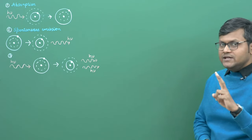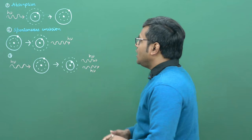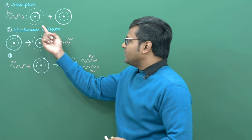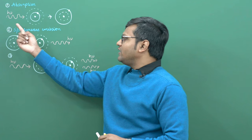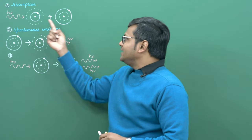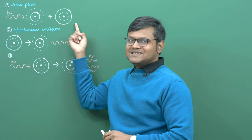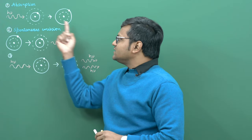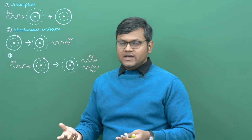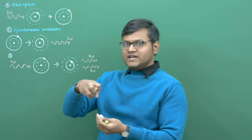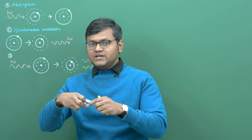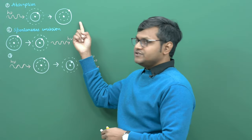This leads to mainly two kinds of transitions. If we have an atom which is in the ground state, it is capable of absorbing a suitable radiation and getting excited to a higher excited state. This is known as simply absorption or stimulated absorption, in which an atom in a lower state absorbs an incident radiation of sufficient energy and gets excited to a higher state.